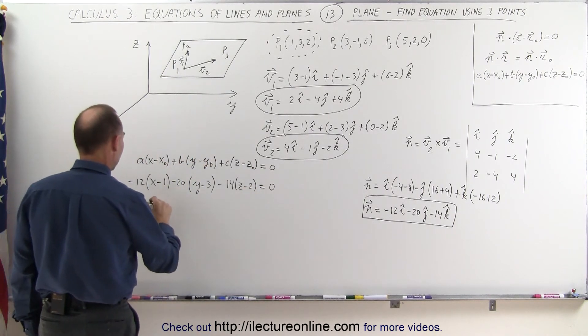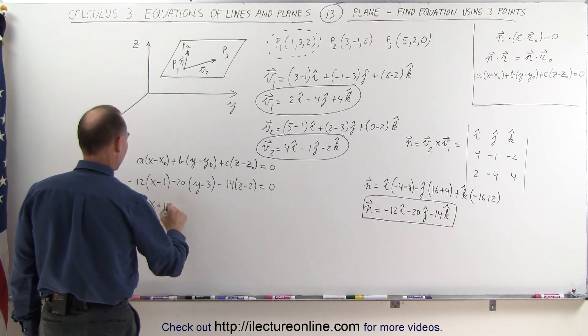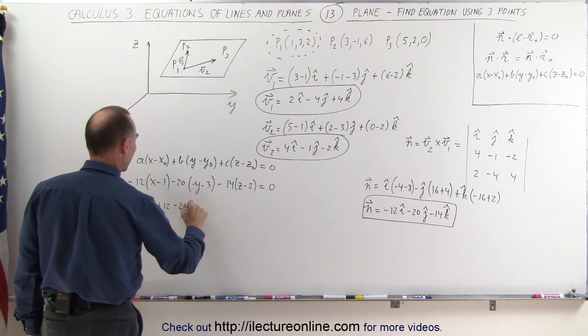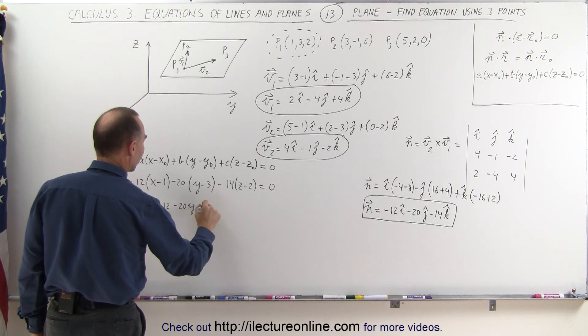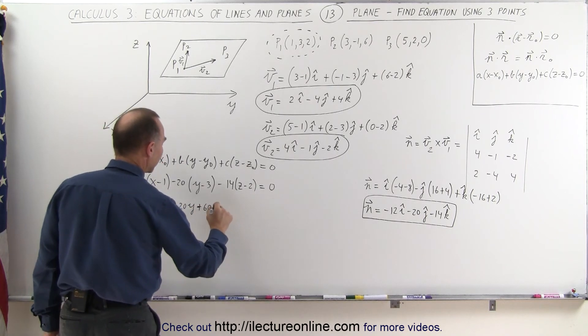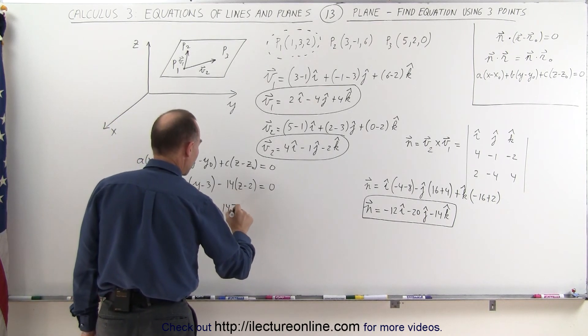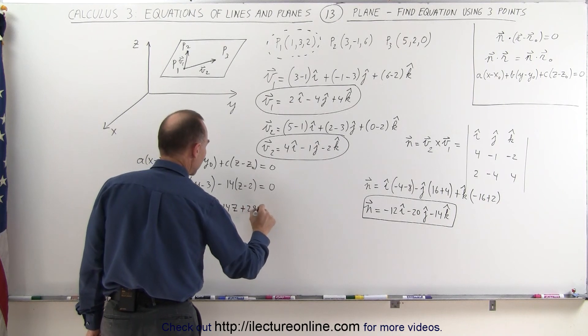Which means I get -12x plus 12 minus 20y plus 60, and I get minus 14z plus 28 equals 0.